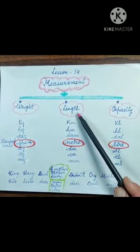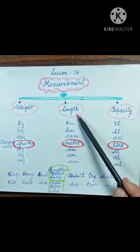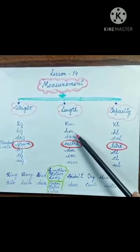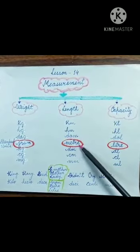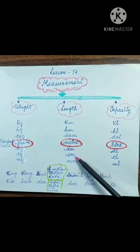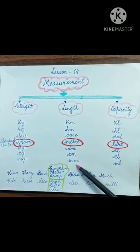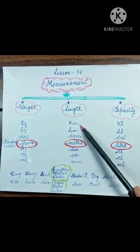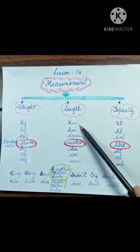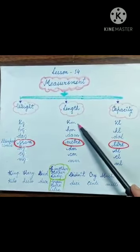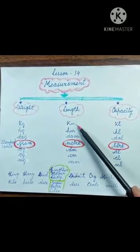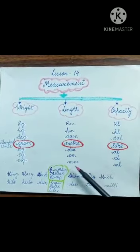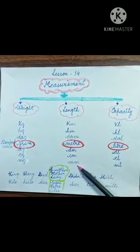Now measurement of length: kilometer, hectometer, decameter, decimeter, centimeter and millimeter. Same way, kilometer is the biggest unit — when we have to tell about distance it is measured in kilometers — and millimeter is the smallest unit.